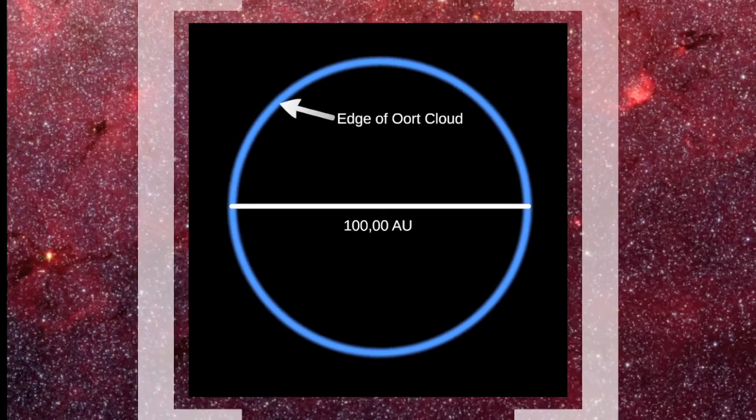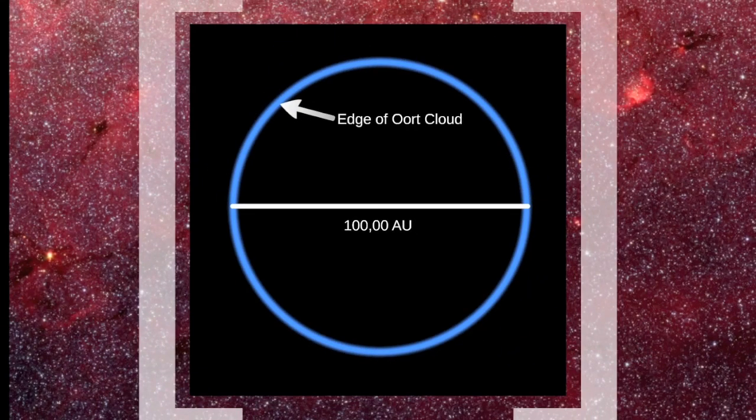The diameter of our solar system, including the Oort cloud of comets, is roughly 100,000 AU. But our Milky Way is much larger — its diameter is 100,000 light years.